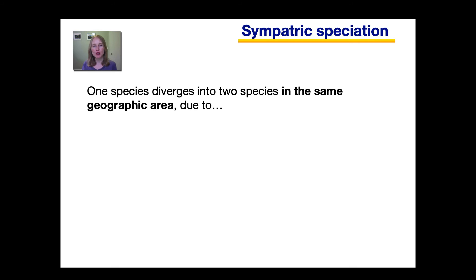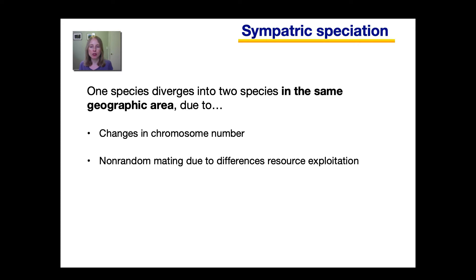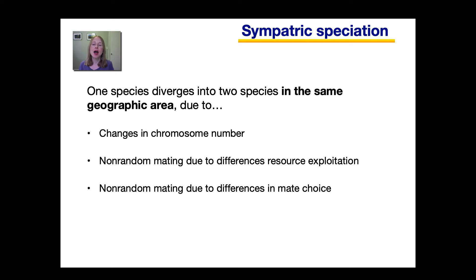Now let's turn to sympatric speciation — this is when one species diverges into two species in the same geographic area. This was controversial for a long time, because it's a lot easier to imagine how new species might form in different geographic areas. But we now know that it does occur, and it can occur due to changes in chromosome number, non-random mating among individuals due to differences in resource exploitation, and non-random mating due to differences in mate choice.